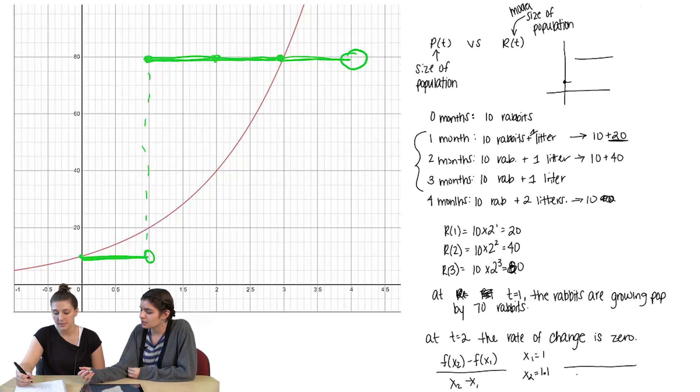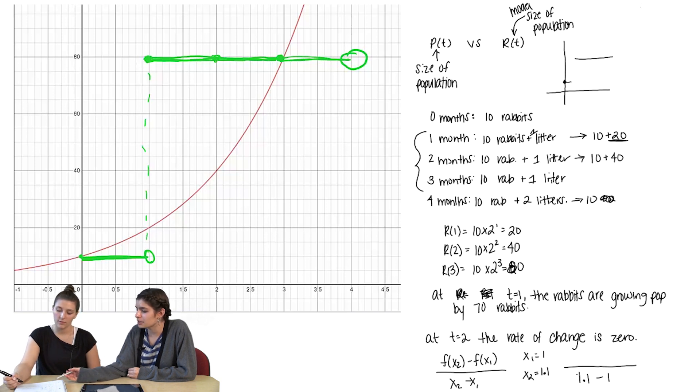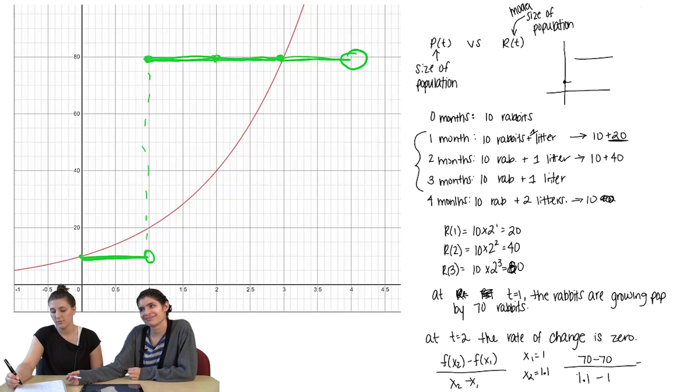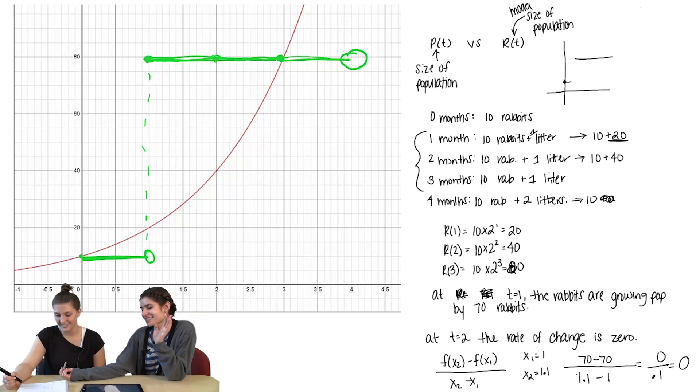So if we plug this into P(t), on the denominator we would get 1.1 minus 1. And the numerator would be at one month, what is our population? 70. And at 1.1 months, what is our population? 70. So 70 minus 70, which is 0 over 0.1. Oh no. That was not a good idea.